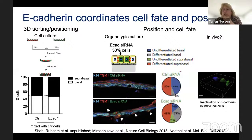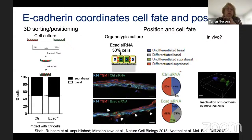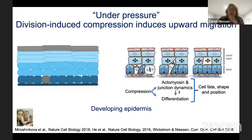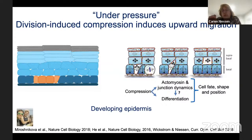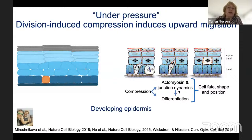We've uncoupled fate and positioning. Compression induces actomyosin dynamics and junctional dynamics, and this is coupled to differentiation. This allows coordination of cell fate changes with shape changes and positioning. At least in the developing epidermis, this seems to be one mechanism for how you position cells and overcome fate compartments to move into a different fate compartment.